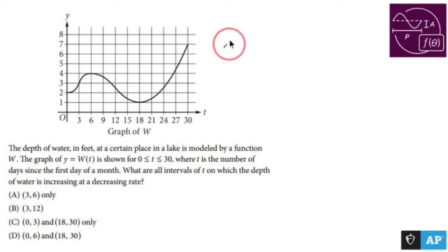First off, if the slope is positive, it's increasing, but we don't just want positive slopes because we see positive slopes everywhere. They want increasing at a decreasing rate. What's the difference?